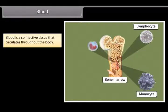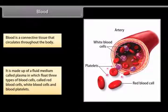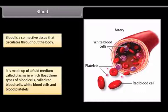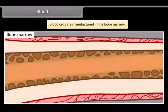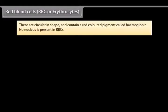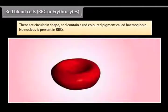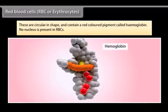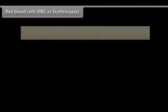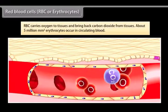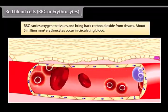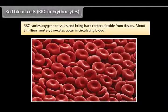Blood. Blood is a connective tissue that circulates throughout the body. It is made up of a fluid medium called plasma in which float three types of blood cells called red blood cells, white blood cells and blood platelets. Blood cells are manufactured in the bone marrow. Red blood cells, RBC or erythrocytes, are circular in shape and contain a red colored pigment called hemoglobin. No nucleus is present in RBCs. RBC carries oxygen to tissues and bring back carbon dioxide from tissues. About five million per mm cube erythrocytes occur in circulating blood.